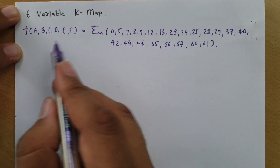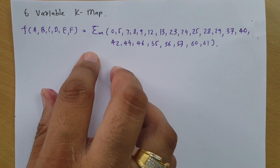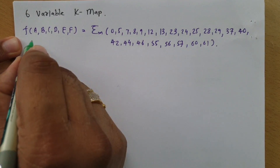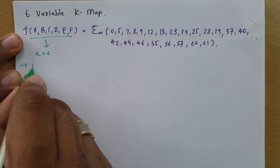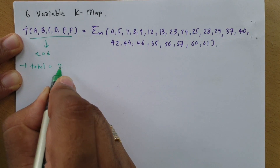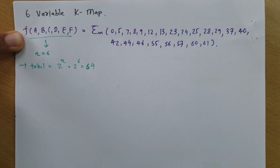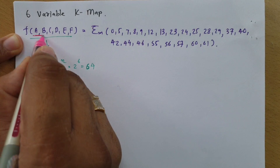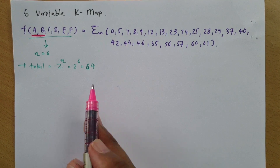Here we have a six-variable K-map and we are required to solve this six-variable function by Boolean expression using six-variable K-map. First, if you observe, there are total six variables, so n equals 6. As per that, the total number of cells is 2 to the power n, that is 2 to the power 6, which means 64 cells. What we can do is take the variables AB to identify a 16-cell group.